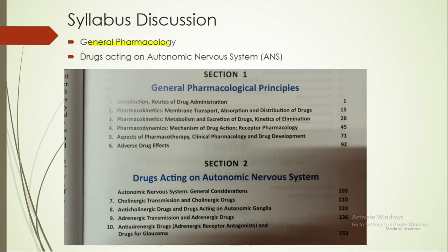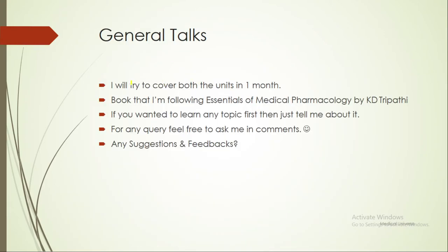In your syllabus, your first unit is general pharmacology and your second unit is drugs acting on the autonomic nervous system, that is ANS. These two units are your foundation units, which will make your base and foundation in pharmacology.